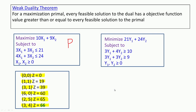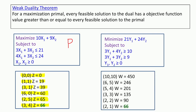Let us find some feasible solutions to the dual. First, (0, 0): 3×0+4×0=0 is not ≥ 10, so (0, 0) is not feasible. We try large values: Y1=10, Y2=10 gives 30+40=70 ≥ 10 and 30+30=60 ≥ 9, so it is feasible with objective value 21×10+24×10=210+240=450.